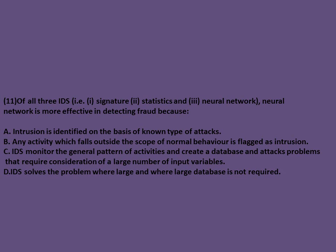Out of the three IDS types, neural network is more effective in detecting fraud because it is capable of capturing relationships and patterns often missed by other statistical methods. General patterns of activities are monitored and a database is created. Signature-based IDS and statistical-based IDS are the other two types.